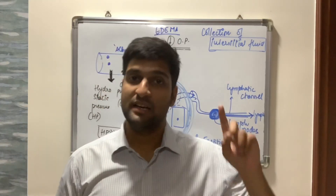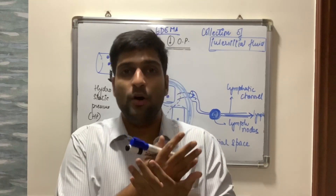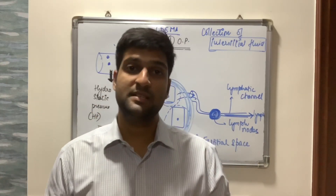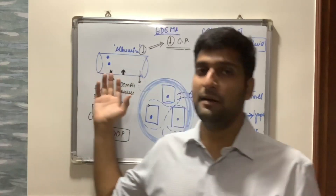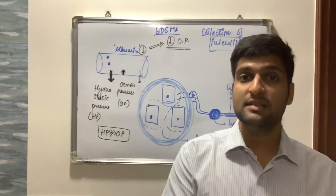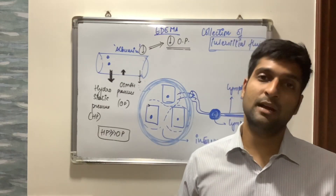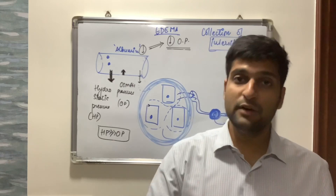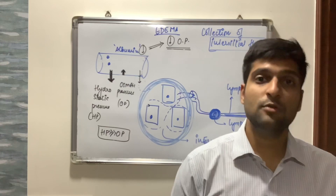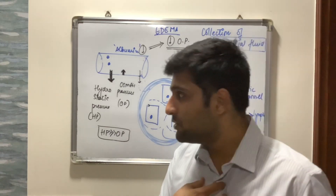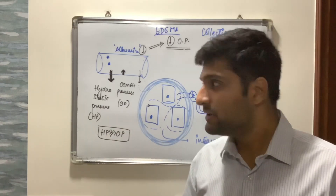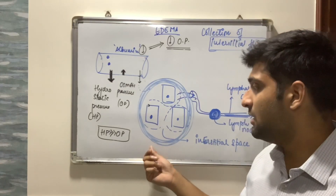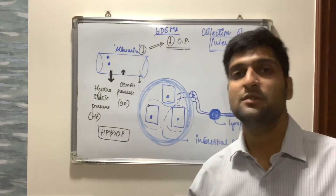One reason for decreased albumin is kidney failure — specifically nephrotic syndrome, a protein-losing disease. Another is kwashiorkor or marasmus, which is protein energy malnutrition — if you don't take in protein, albumin levels fall. Liver disease such as liver cirrhosis also causes edema, since the liver converts protein into albumin. Heart failure leads to decreased pumping, causing blood to remain stagnant in vessels, increasing hydrostatic pressure, and leading to more interstitial fluid accumulation and edema.